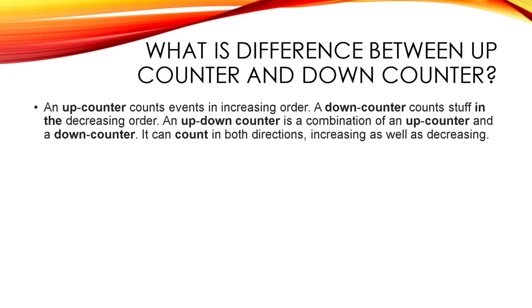What can be the difference between up counter and down counter? So here we are going to see what is the difference between up counter and down counter. An up counter counts events in increasing order which is increment. A down counter counts stuff in the decreasing order means totally opposite to the up counter. An up counter is a combination of an up counter and down counter. It can count in both directions increasing and as well as the decreasing.